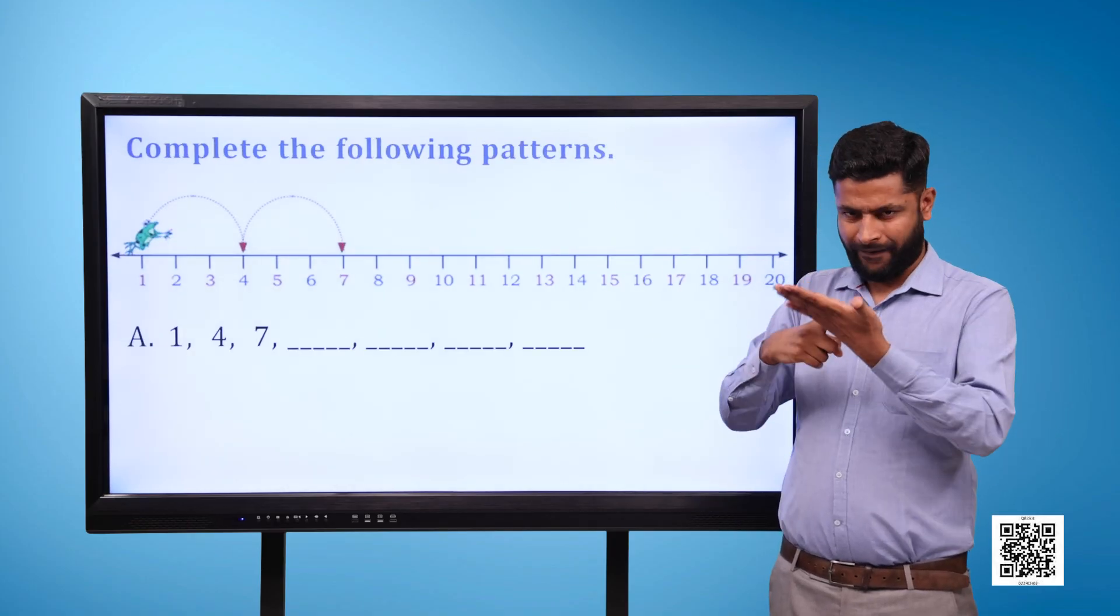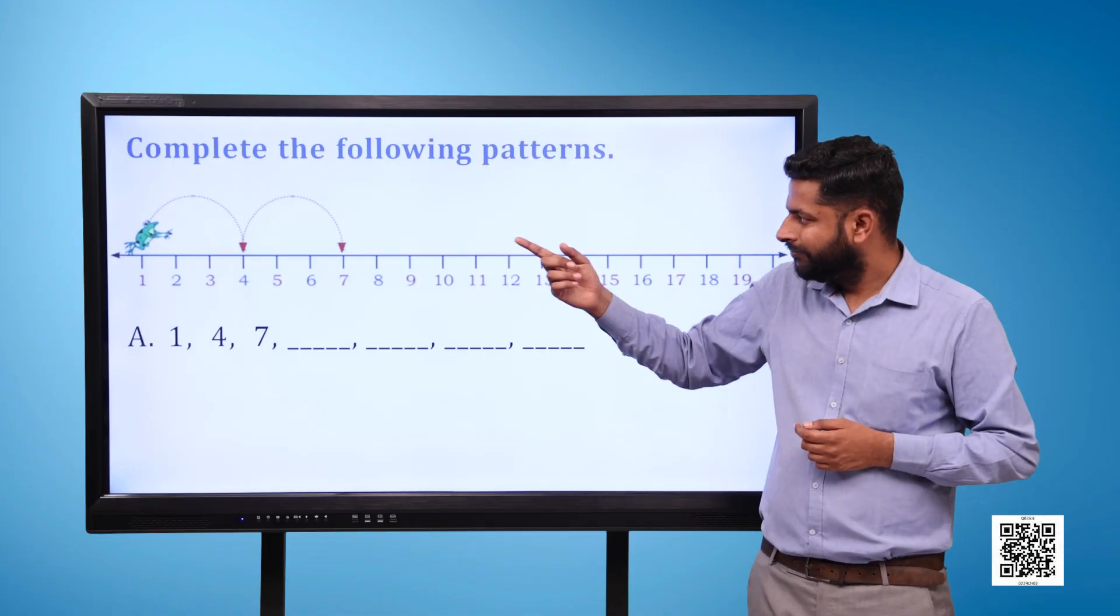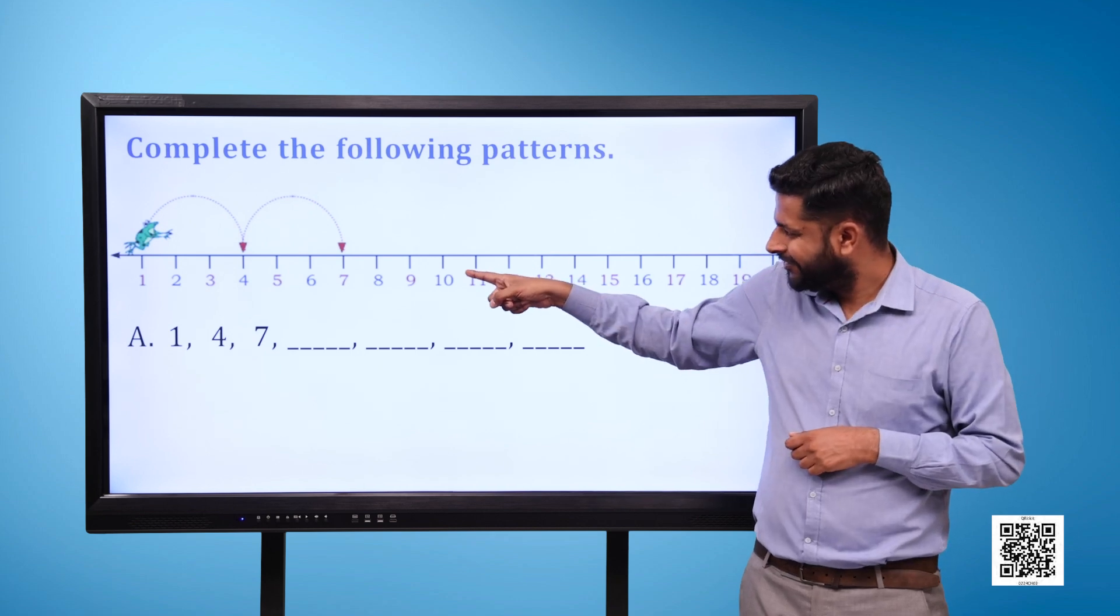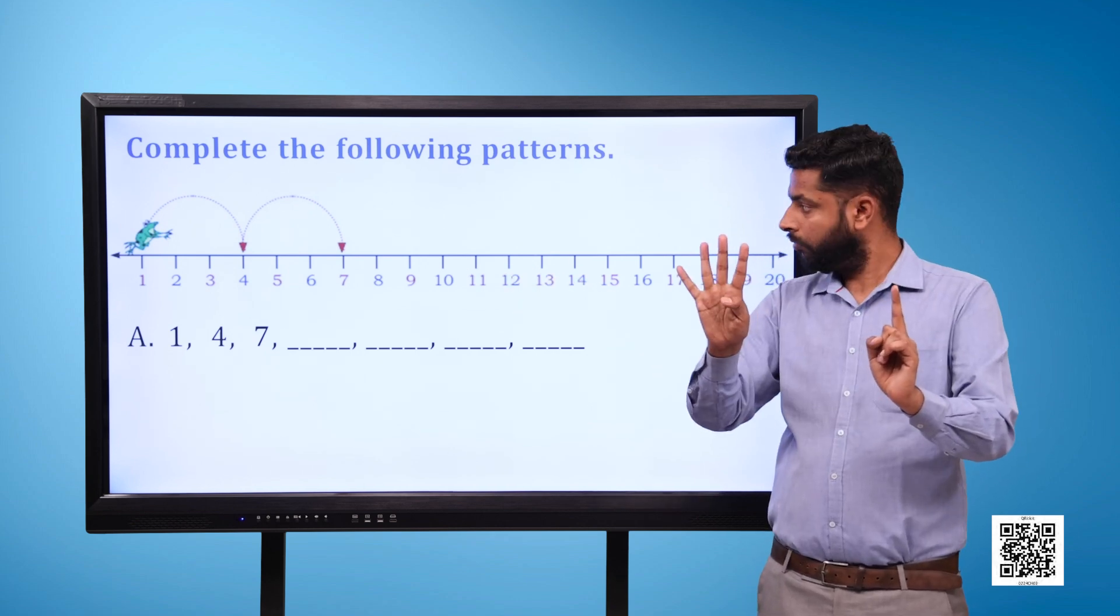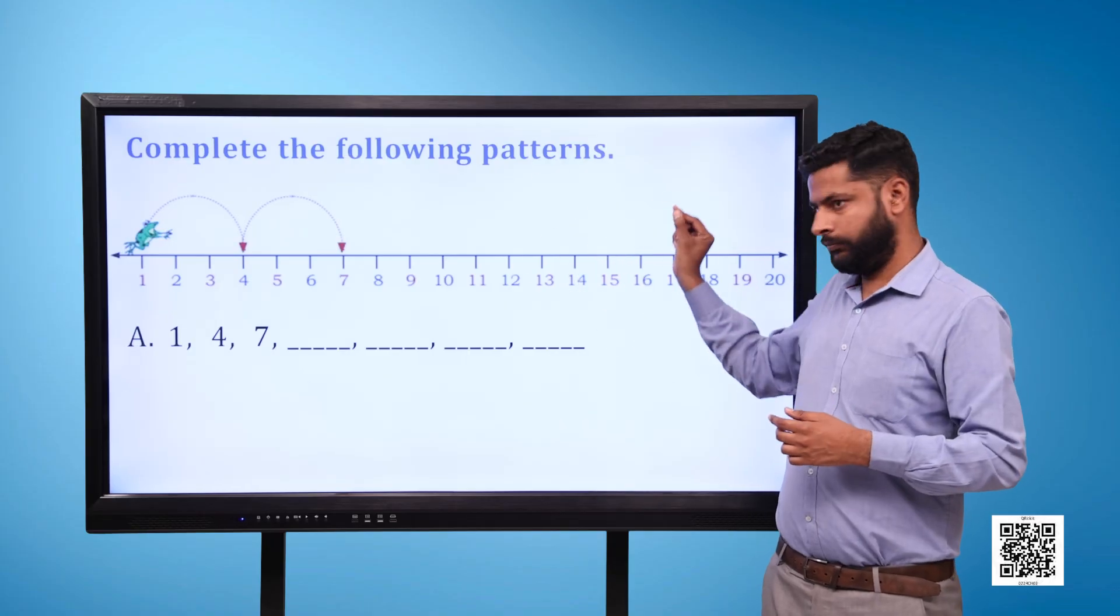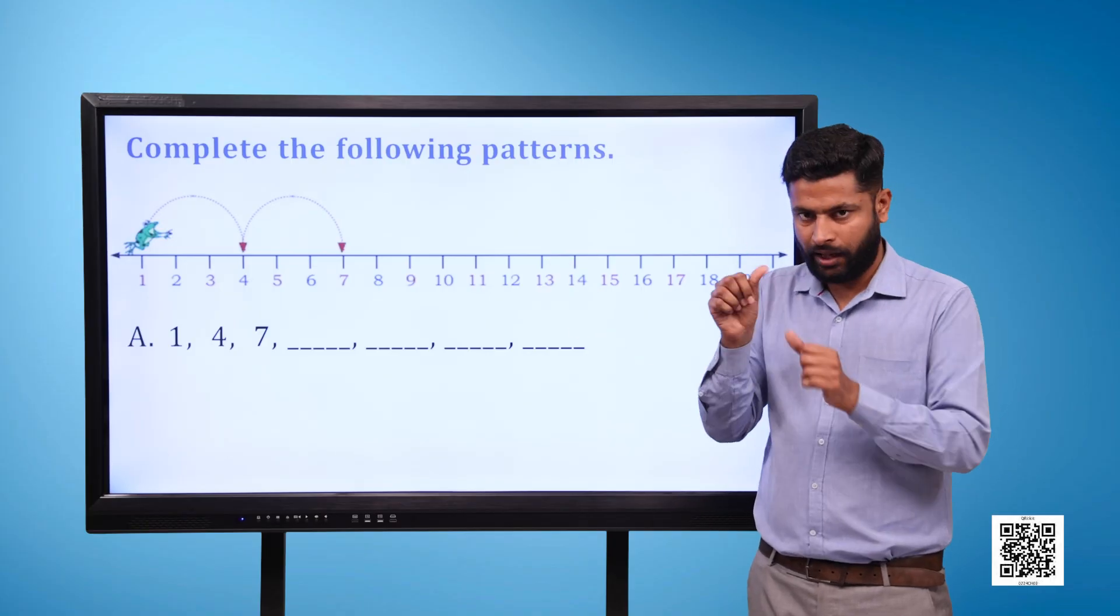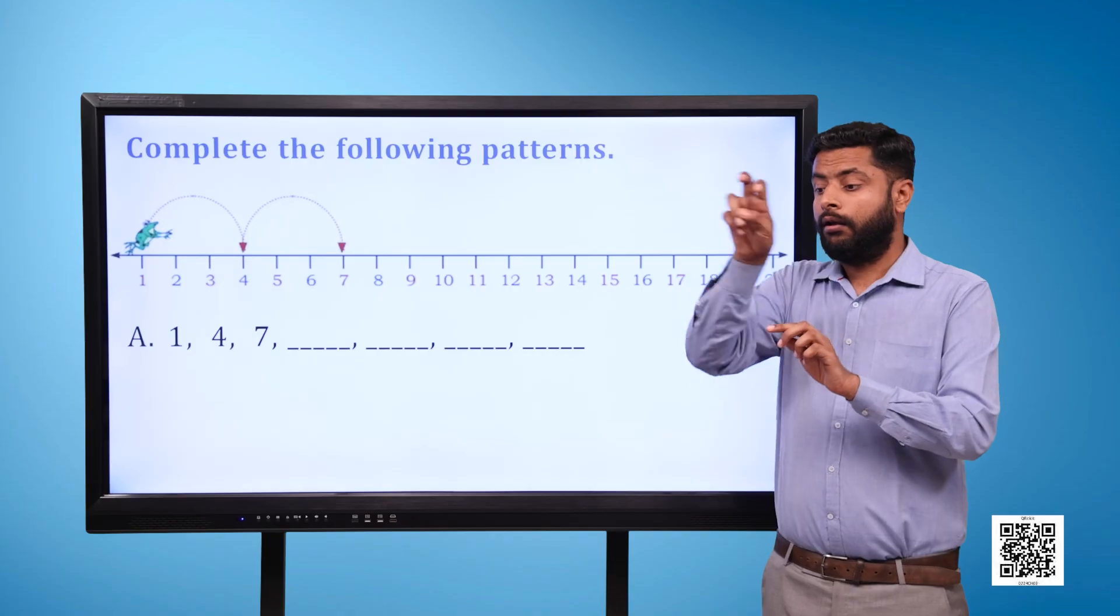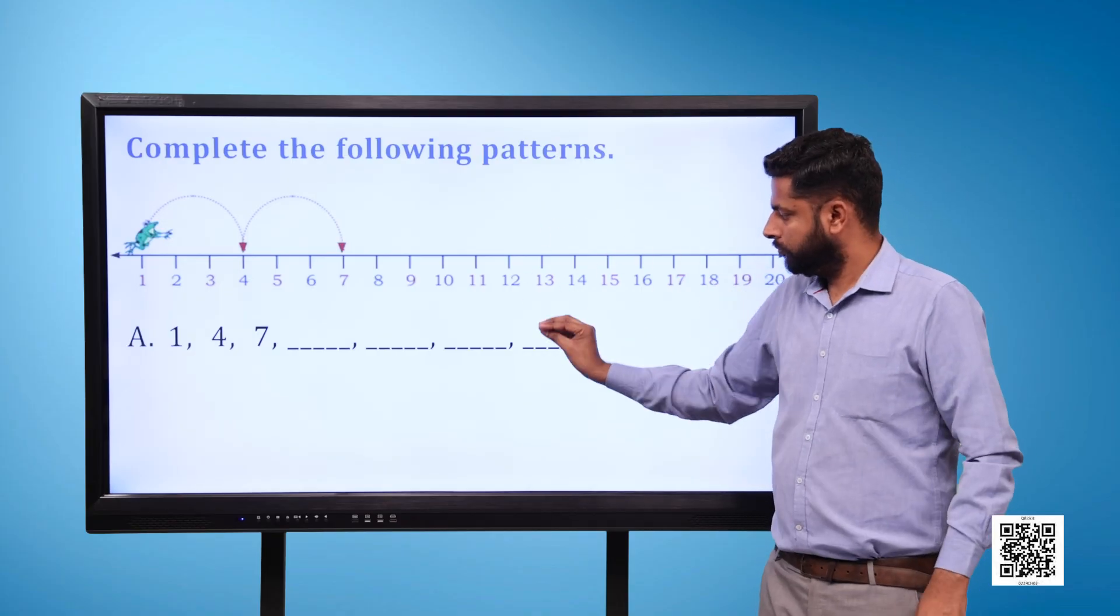Complete the patterns. Now once again we have a number line. The first number is 1 and the last number is 20. The frog is sitting on point 1. In every jump he crosses 3 points. In his first jump he starts from number 1 and goes to 4, then from 4 to 7. Now give the answers: 1, 4, 7, blank, blank, blank, blank.